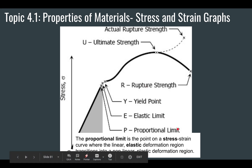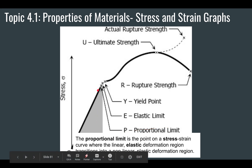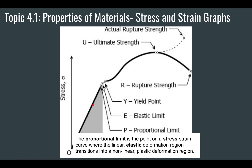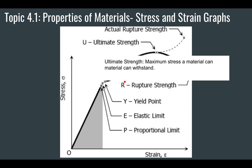The proportional limit, marked with a P, is the point where the linear elastic deformation transitions to the non-linear plastic region. Anything along the straight line below this point is elastic — meaning the material will snap back to its original shape. The yield point is the stress beyond which the material becomes permanently plastic, meaning it will change shape and not return. The ultimate strength is the maximum stress the material can withstand before it breaks.